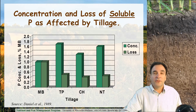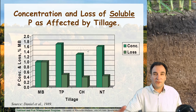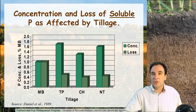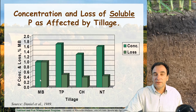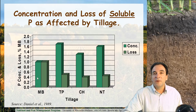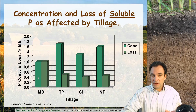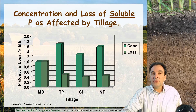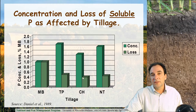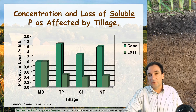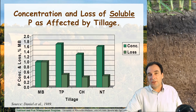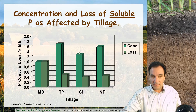Remember in part one of this discussion we talked about concentration of phosphorus versus load or loss of phosphorus. Here we're comparing our losses and concentrations of phosphorus to moldboard, so everything is relative to moldboard plowing. In terms of concentration — the amount of phosphorus per unit of runoff leaving the landscape — our conservation tillage systems are actually higher than moldboard systems, due largely to their crop residue in terms of the amount of dissolved phosphorus contained in the runoff.